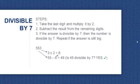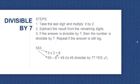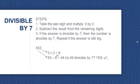In order to understand the steps, let's take a look at this example. 553. The last digit is 3, so we need to multiply it by 2. 3 times 2 is equal to 6. Now we need to subtract 6 from the remaining digits, which are 55. 55 minus 6 is equal to 49. Is 49 divisible by 7? Yes. So 553 is divisible by 7.